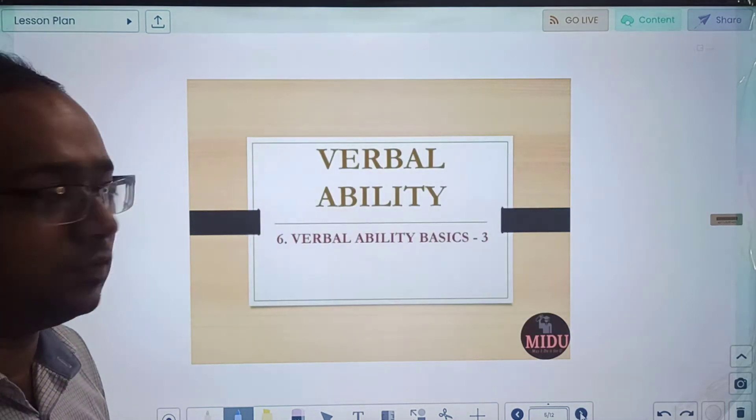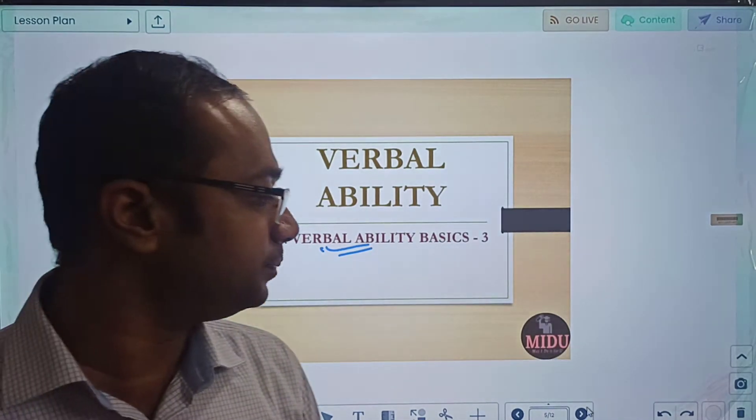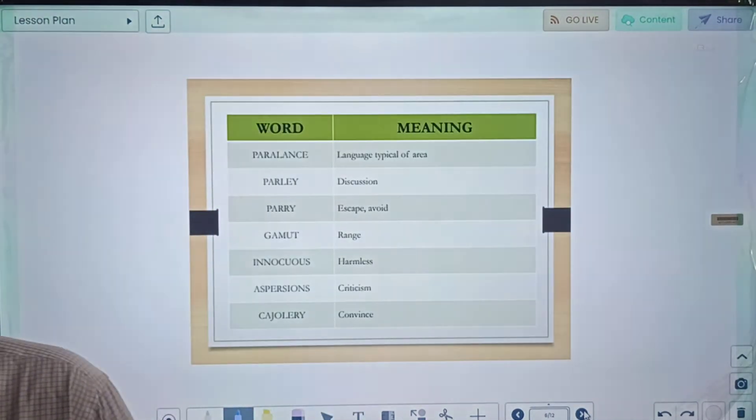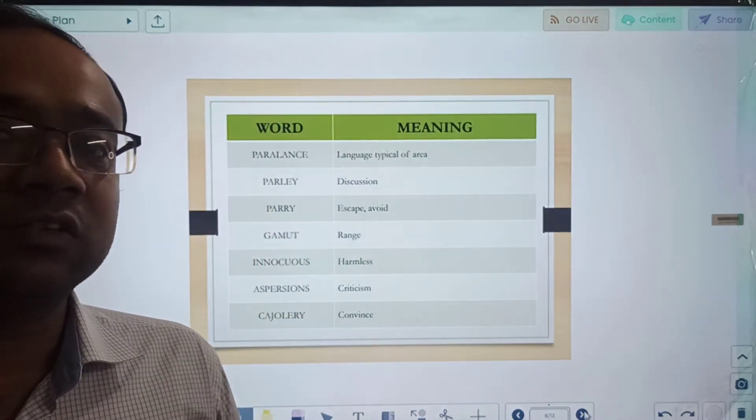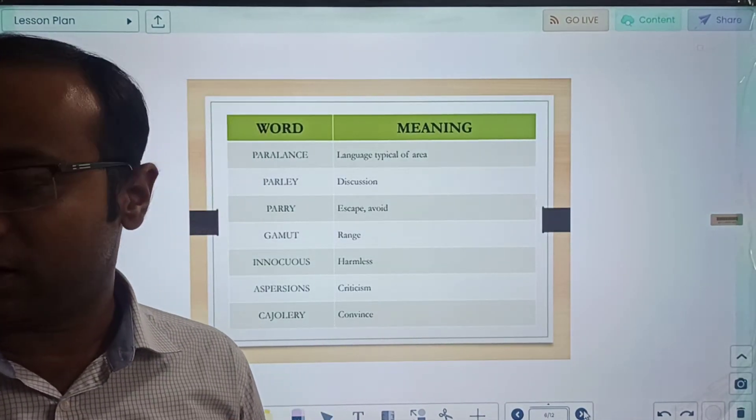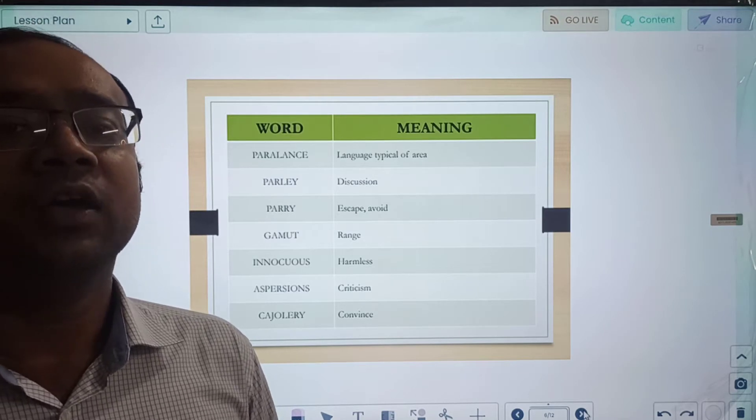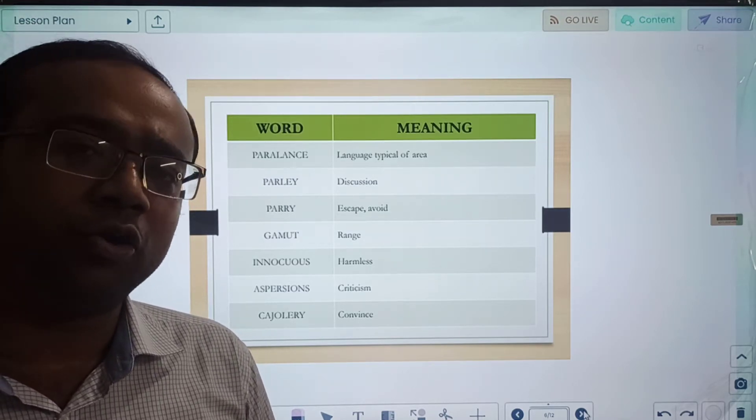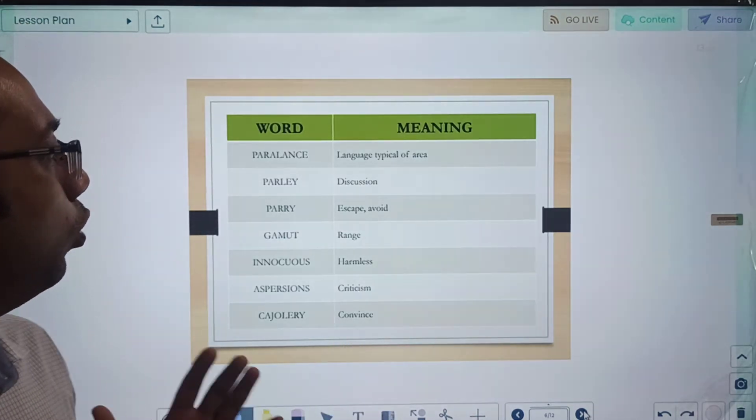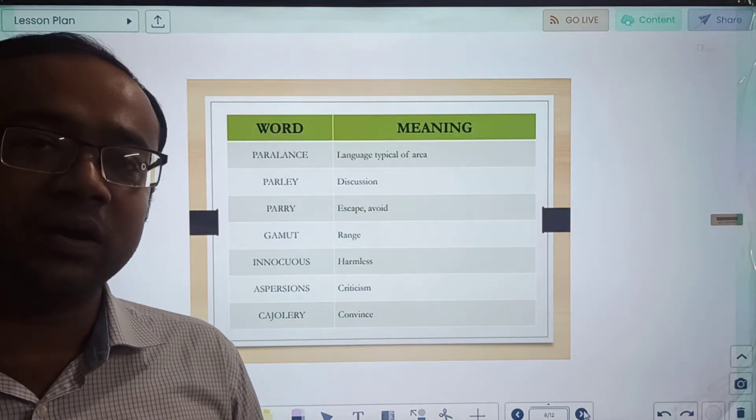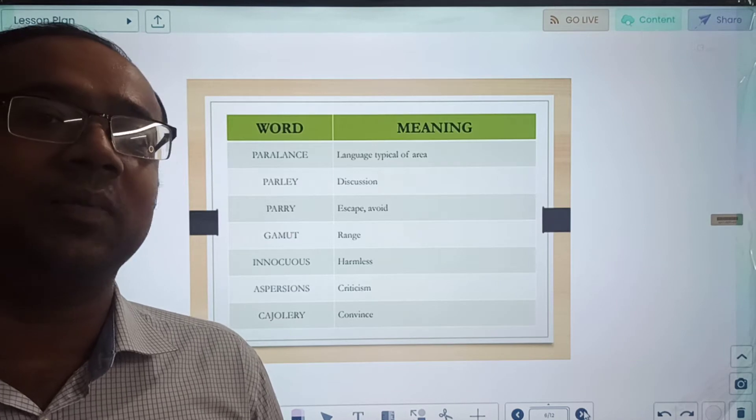Let us start today's video and do our part of VA basics. In VA basics three, we will continue our previous VA basics two part. In VA basics one we did some important roots for CAT and understood new words. In video two we learned some new words which can be used in CAT, appear in your antonym synonym questions, paraphrasing questions. In today's video, I will be discussing another set of 35 words.